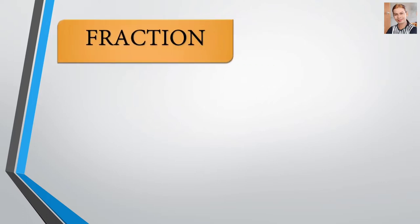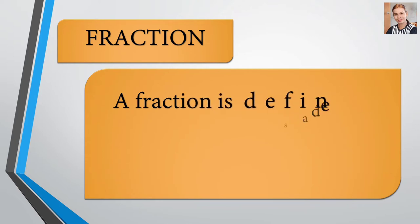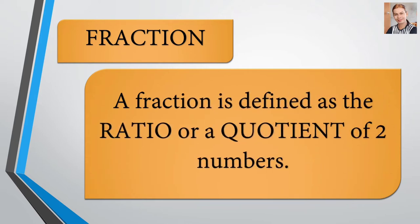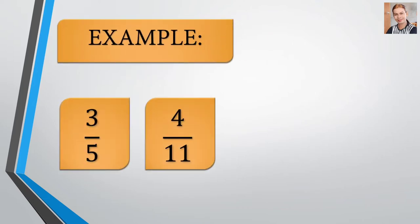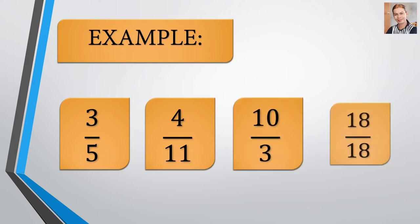Our topic is all about types of fraction and let us define first what is fraction. Fraction is defined as the ratio or quotient of two numbers. Examples of fractions are 3 fifths, 4 over 11, 10 over 3, and 8 over 10. Those are examples of our fraction.